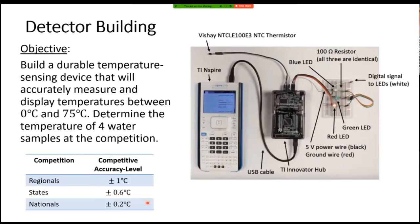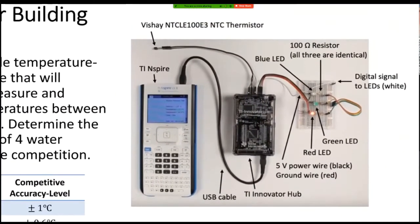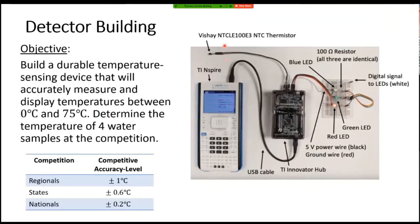And the way this contraption works is you have right here a temperature sensing probe. And this is a fancy piece of electronics. It's a resistor, but its resistance changes with temperature. So if you dunk it in hot water, it will have a high resistance. If you dunk it in cold water, it will have a low resistance.